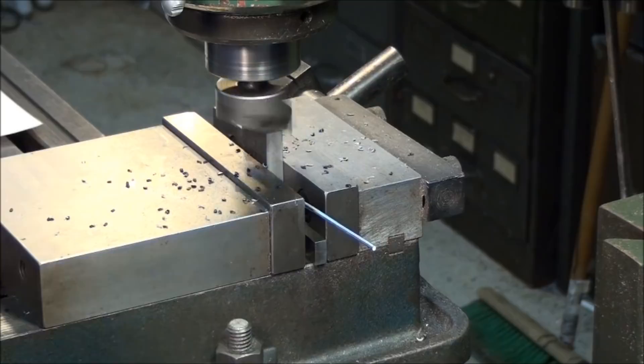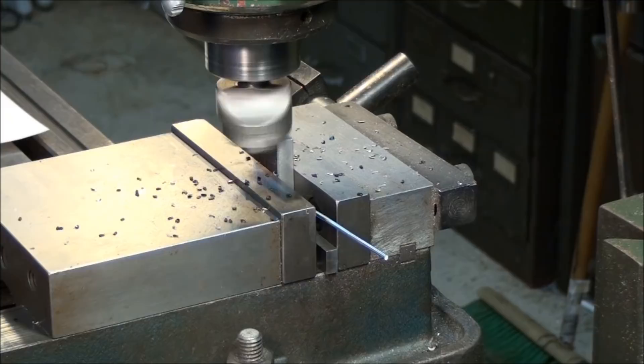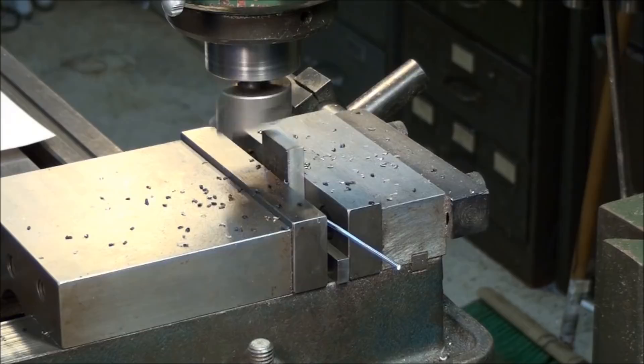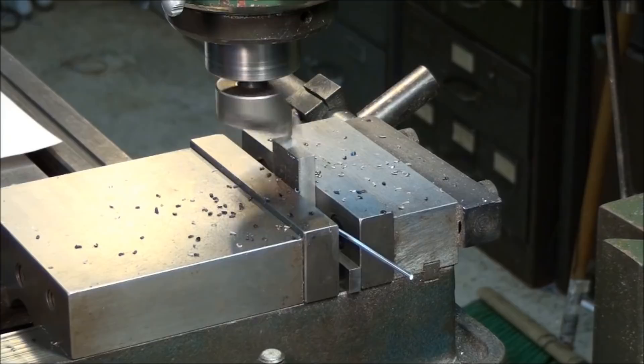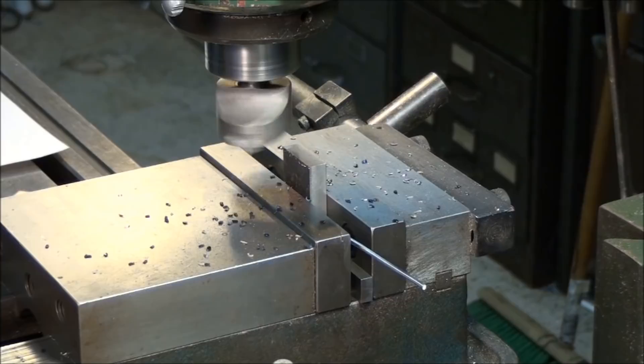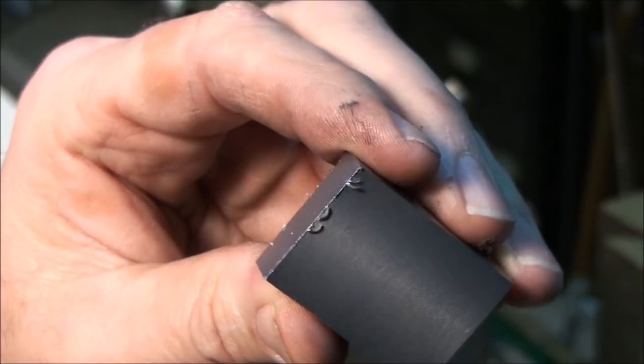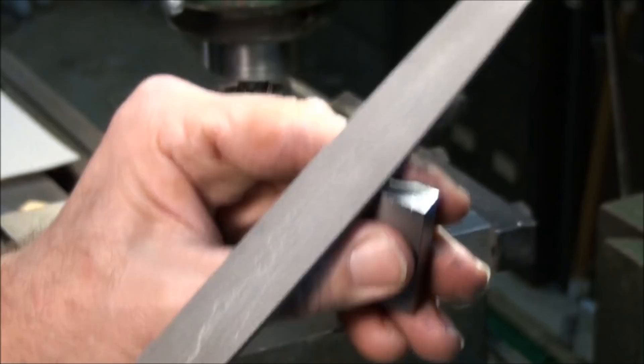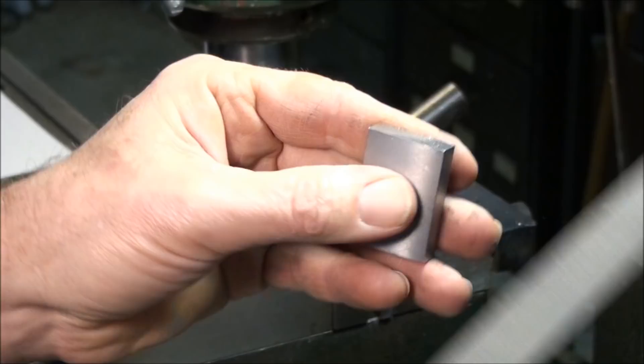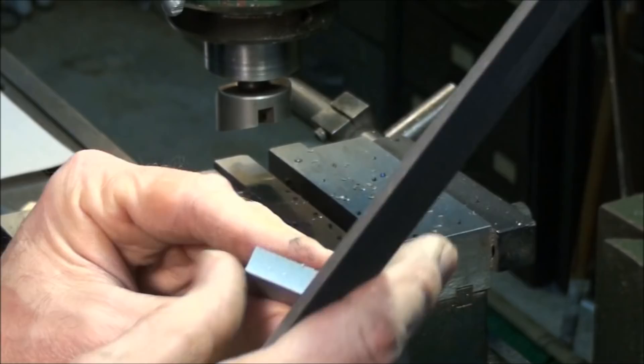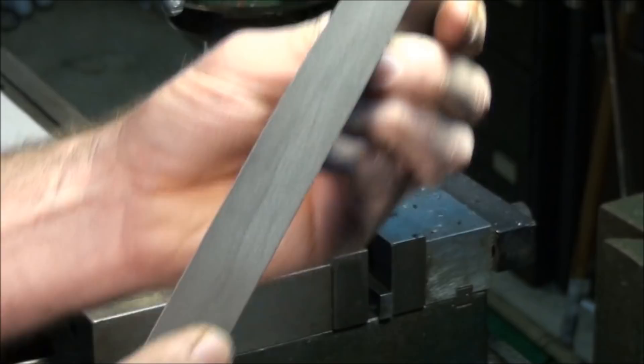I'm conventional mowing this one, so it's going to have a little larger burr on the backside. But no problem, something we can file off. You can see the difference. You can see how much bigger the burr is when you're conventional milling. No match for a sharp file, though. Make sure we get all the burrs off. I like to knock the corners off.